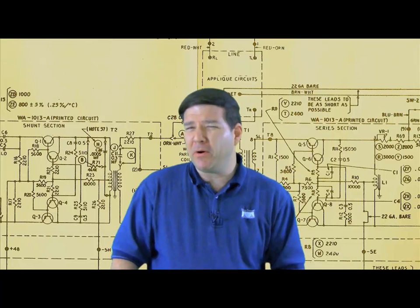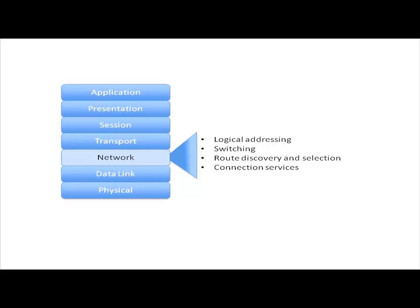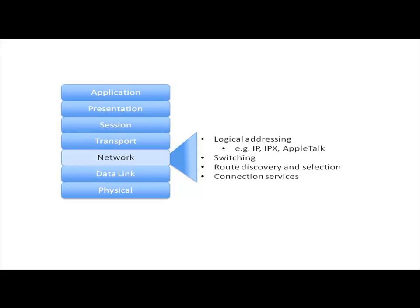At layer three, we're concerned with several things. Check out this graphic. Notice at layer three we're concerned with logical addressing, switching, route discovery and selection, and connection services. Logical addressing is what a lot of people think of at layer three, because it's here where we logically assign a network address. We've got different routable protocols like IP — the internet protocol — which we typically use in most networks today. Back when I used to work for a local university, we would route not only IP, but also AppleTalk and Novell's IPX. However, today both Novell and Apple are using IP primarily to route their traffic, so IP by far has become the predominant layer three protocol. We're going to have different layer three addresses and be able to intelligently forward or route traffic between these different logical networks defined here at layer three.